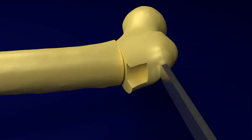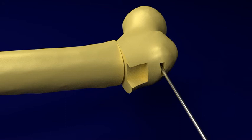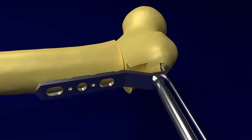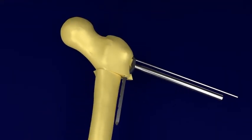The plate is placed over the guide wire. It's fixed using a reduction clamp through the middle locking hole, and alignment is checked.